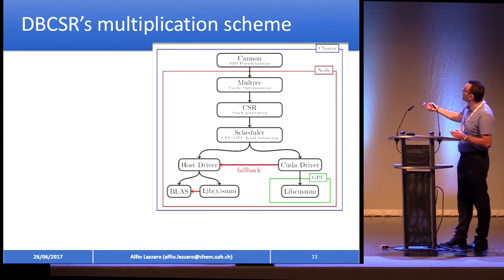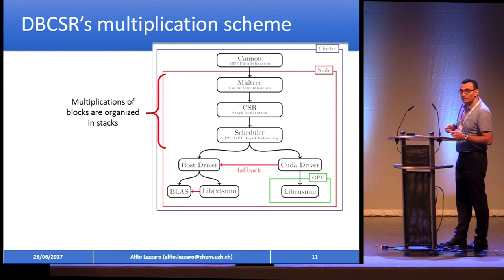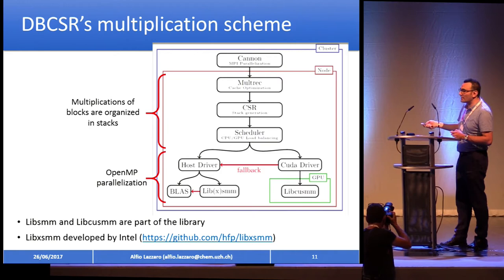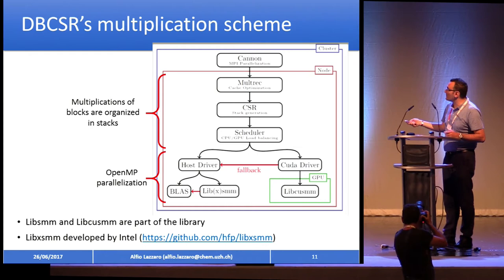The Cannon algorithm sits on top of the MPI parallelization; you do the multiplication over processors. You organize the block multiplications into stacks, and then you can parallelize those multiplication stacks using OpenMP to send to the CPU, or using a special library to send to the GPU. We have a GPU backend for those small matrix multiplications — this is the meaning of SMM. There are special libraries for that, including one from Intel.